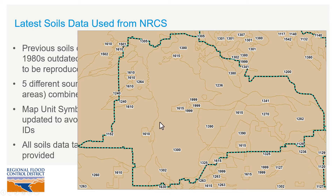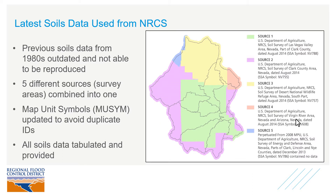This soils data is a complete data set that we provide electronically, and it can be used by the engineering community to do their analysis and modeling. It's worth mentioning that the updated soils data and changes in the hydrologic soil groups can be significant compared to the previous soils data. However, the soils data used in previous MPUs is from the 1980s and is considered outdated — that data is no longer published, can't be reproduced, and is not based on the latest sampling and testing methods. So this new data will be used going forward at the district.